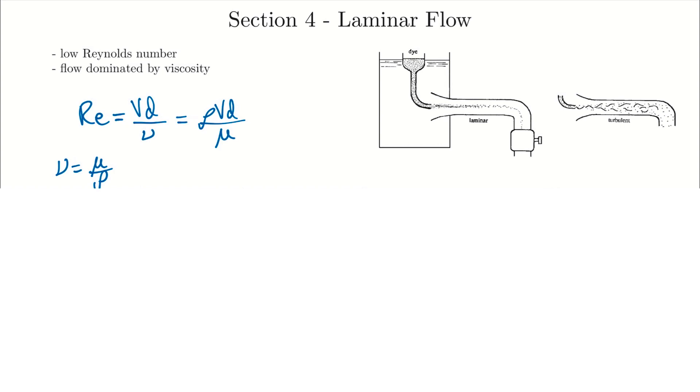At higher Reynolds numbers the flow transitions into a more chaotic, what we call turbulent flow. One way to increase the Reynolds number is to increase the velocity, since velocity is in the numerator. I'll show a video here where the velocity increases and the Reynolds number also increases — we see it starts off at low velocities with a more laminar, organized layered flow, and as the Reynolds number goes up it transitions to this chaotic turbulent flow.